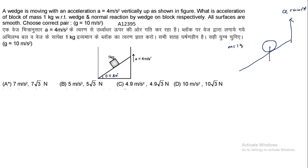नीचे की तरफ weight की वजह से force = 10 N काम कर रहा है। Pseudo force इस पर m × a = 4 N लगेगा। तो vertical direction में कुल नीचे की तरफ force = 10 + 4 = 14 N हो जाता है — 10 N weight की वजह से और 4 N pseudo force की वजह से। यहाँ angle = 30 degree है।